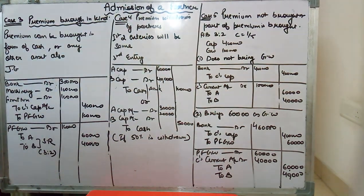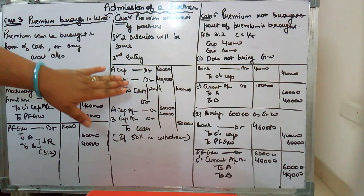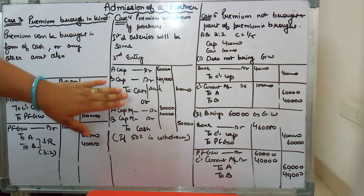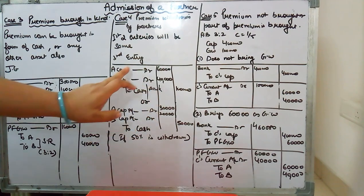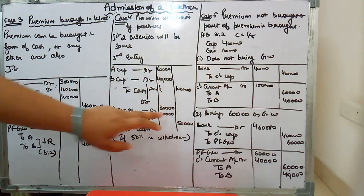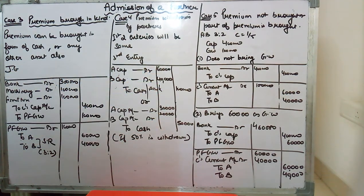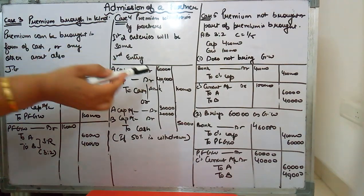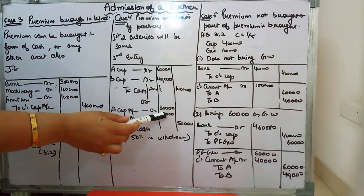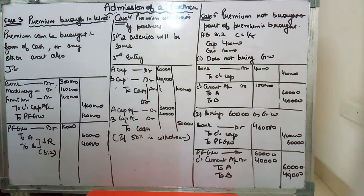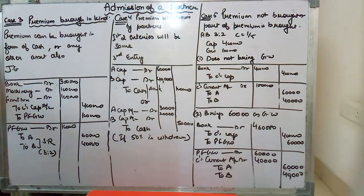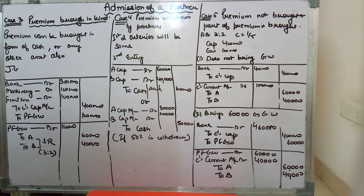If they do not withdraw the entire balance — say only 50% is withdrawn — the entry is the same but the amount will be 50%. It can be any percentage. If they withdraw 70%, then 70% of the amount is taken. Whatever percentage is given in the question, pass the entry accordingly. The first two entries will remain the same in this case.